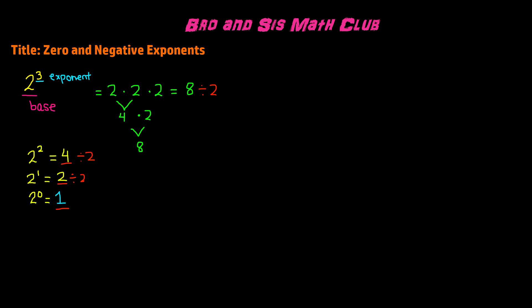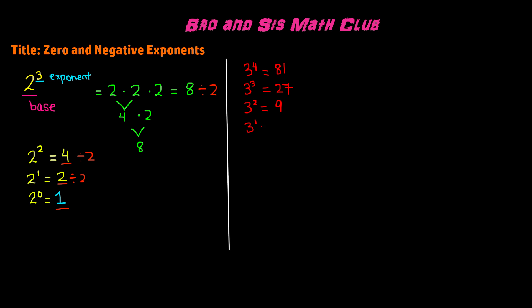This is the zero property of exponents. Now let's take a look at negative exponents. We have 3 to the power of 4, which is 3 multiplied by itself 4 times, giving us 81. 3 to the power of 3 is 3 times 3 times 3, which is 27. 3 to the power of 2 is 9. 3 to the power of 1 is 3, since any number to the power of 1 is itself. And 3 to the power of 0 equals 1, following the zero exponent property.